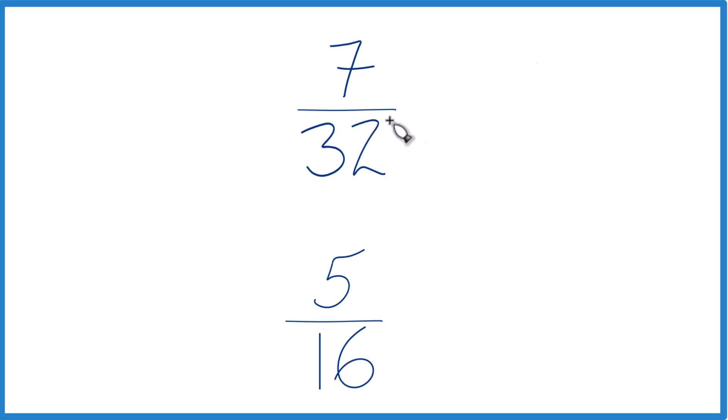Another way to do it is to find a number that both 16 and 32 go into evenly. 16 times 2 equals 32.